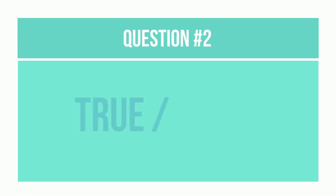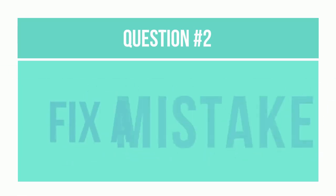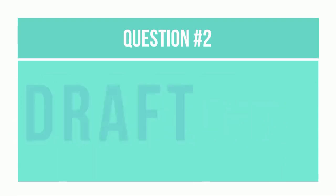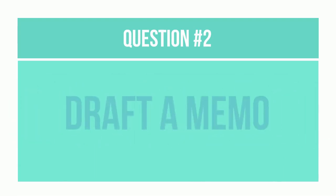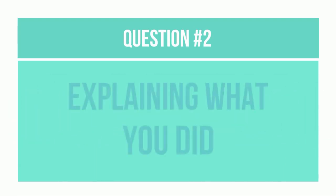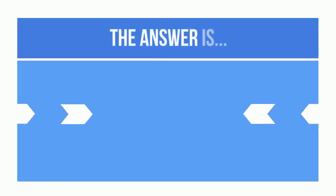Question 2. True or False: After you fix a mistake in a household file, you should also draft a memo to the file explaining what you did. The answer is true.